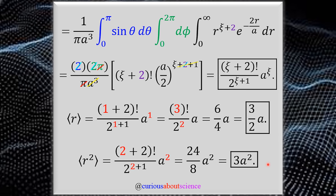It also makes you ask: what about r to the zeroth power? That would just be integrating the probability distribution. Plugging in ξ=0 gives (0+2)! = 2 divided by 2^(0+1) = 2, times a^0 = 1 — a coefficient of one, which is the normalization check. More generally, these forms let you examine boundary cases more easily, including what happens when we want the most probable value of r, which appears later in the book.